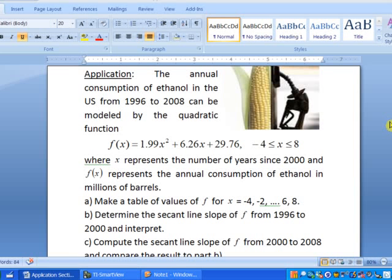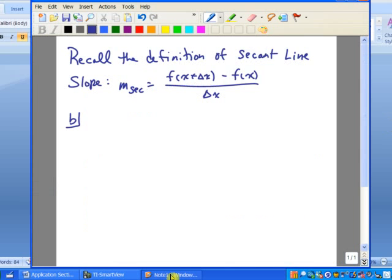Here we want to take a look at an application of secant line slope. Let's just take a quick minute to review the formula. Recall the definition of secant line slope: it is f of x plus delta x minus f of x, all over delta x, where delta x is the change in x as we go along.